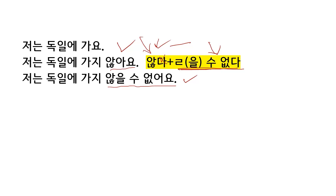저는 독일에 가지 않을 수 없어요. I cannot not go to Germany — you have double negation here. In English, this has a structure like 'I cannot but go to Germany' or 'I cannot help but go to Germany'. So 저는 독일에 가지 않을 수 없어요 means 'I cannot but go to Germany'.